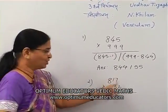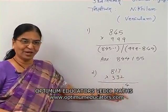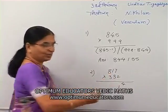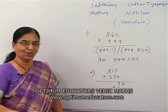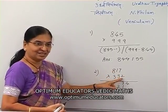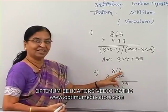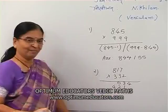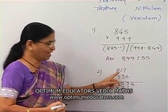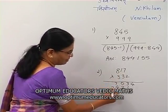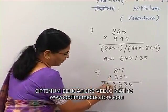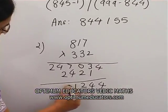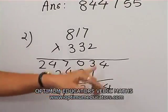Working through Urdhva-Tiryabhyam: first, 2 × 7 = 14, write 4 carry 1. Cross-multiply: 7 × 3 = 21 plus 2 × 1 = 2, total 23, plus carry 1 = 24, write 4 carry 2. Then 8 × 2 = 16, plus 7 × 3 = 21, plus 3 × 1 = 3, total 40, plus carry 2 = 42, write 2 carry 4. Then 3 × 8 = 24, plus carry 4 = 28... giving the answer 271244.